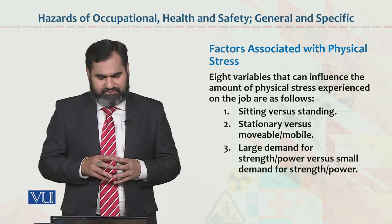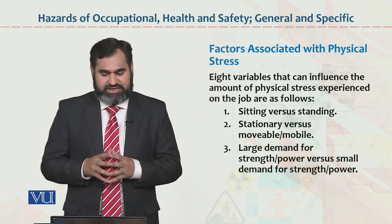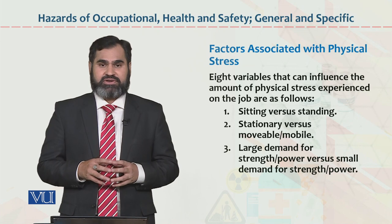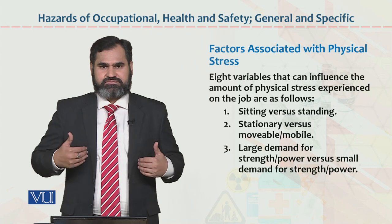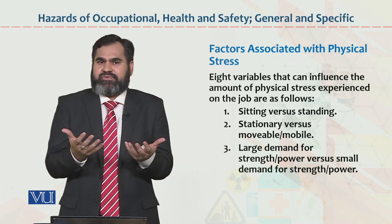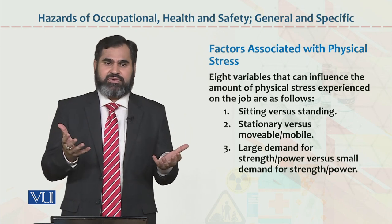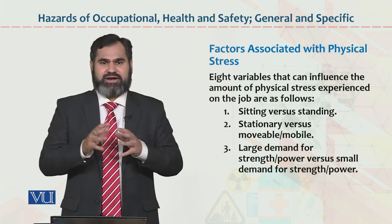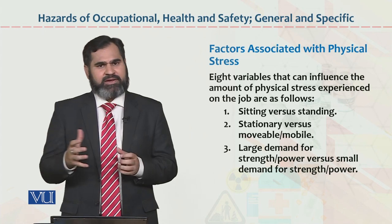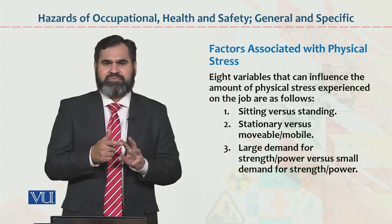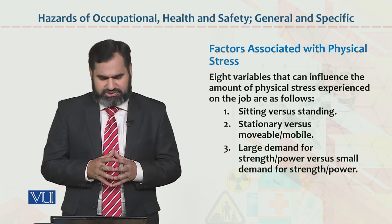Factors associated with physical stress — 8 variables that can influence the amount of physical stress experienced on the job. Number 1: sitting versus standing. अगर आप खड़े होकर काम कर रहे हैं तो chances of tiredness are greater as compared to sitting. आप खड़े रहकर भी काम करें, बैठें भी, walk भी करें, gesture-posture को move करें — इससे आपकी productivity enhance होगी. Number 2: stationary versus movable/mobile — दोनों से performance better होगी. Number 3: large demand for strength/power versus small demand — if your employees are physically fit, results will be better. Employee को physically fit रखने के लिए health और safety के parameters को follow किया जाना चाहिए.